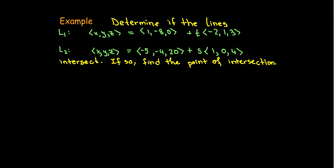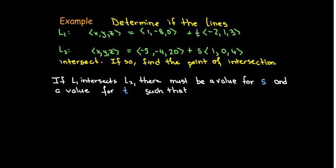Let's look at another example. In this example, we are given the equation of two different lines, and I'm using two different letters for the parameters in these vector equations because it's unlikely that they represent the same value. We'd like to know if these two lines intersect. If they do intersect, let's find that point of intersection. If these two lines intersect, there must be values for s and t—they could be different numbers—such that the position vector for L₂ is the same as the position vector for L₁.